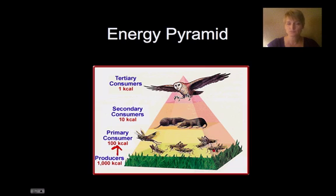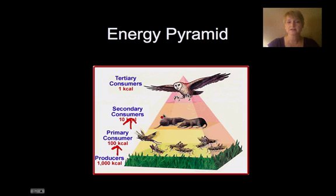So if you're eating these primary consumers you're still getting quite a bit of energy, but not nearly as much as if you're eating a producer. Then up to the secondary consumers — again a 10 percent drop in the energy that's contained there.